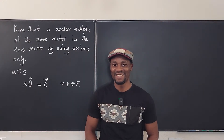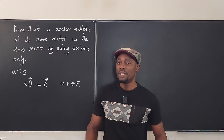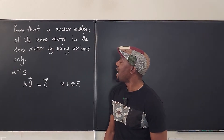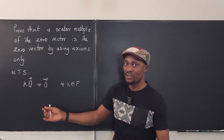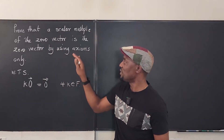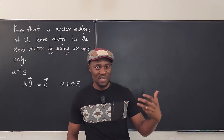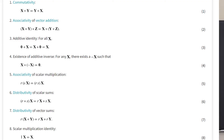Welcome to another video! We have a proof here in linear algebra — to prove that any scalar multiple of the zero vector is the zero vector, but using only axioms. In the previous video I made a list of all the axioms that you need to know, and I'm going to make reference to them for you to be able to do this proof.